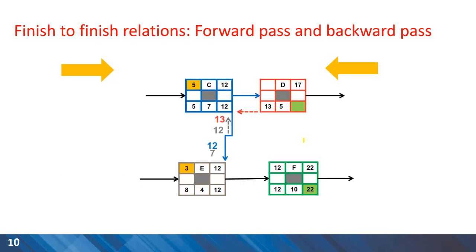Here is an example of a network containing finish-to-finish relationship. As you can see in calculations of the forward pass for activity E, we have two options for early finish. The earliest start for E is three days and the duration of four days. One option for early finish is seven days.